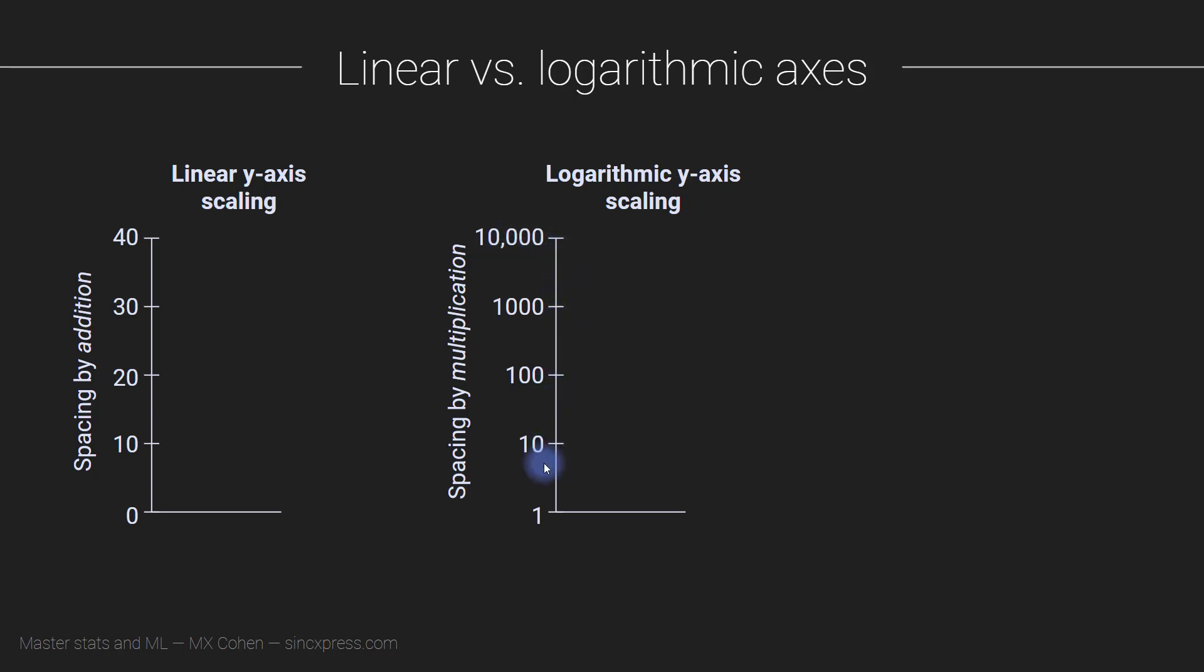This plot is growing really fast. That also means that in linear terms the spacing between each successive tick mark is not the same. These two are nine units apart, these two are 90 units apart, 900 units apart and so on. So this is logarithmic y-axis scaling. The spacing between the ticks is given by multiplication, not by addition with linear scaling.